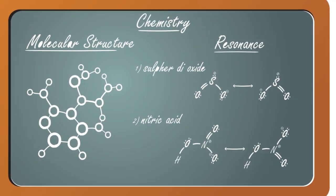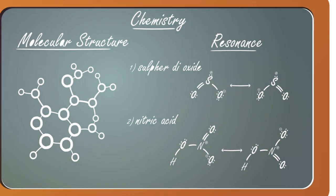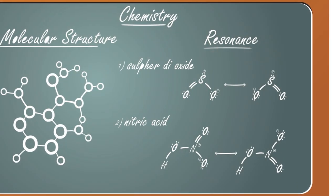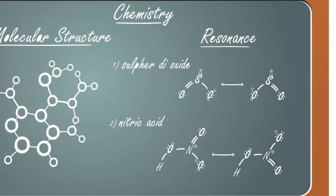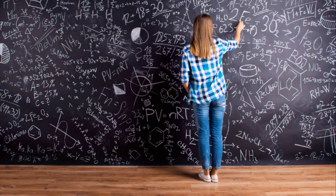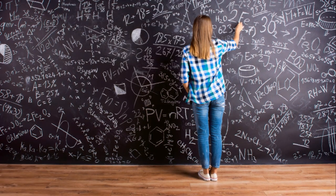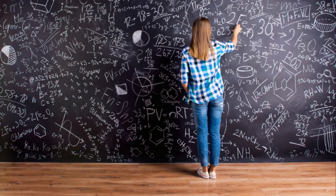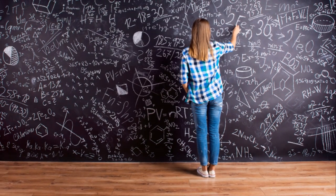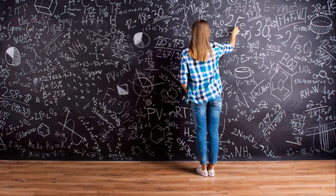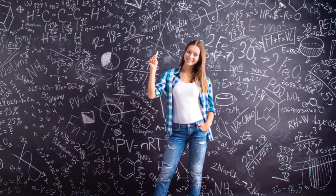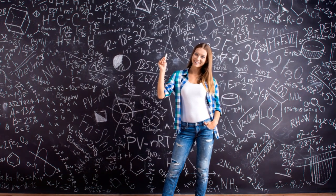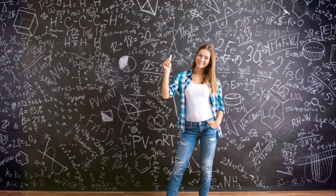So the next time you turn on a light or feel the warmth of the sun, remember our friends — the lightning bolt, the rock, and the comet. And remember Einstein's magical equation, E equals MC squared, the equation that shows how everything in our universe is connected.